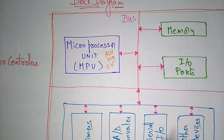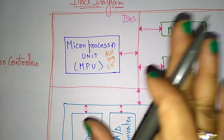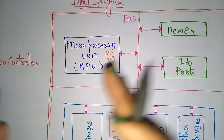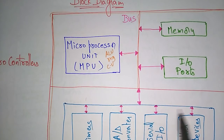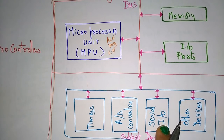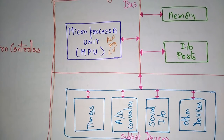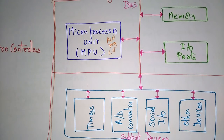The data bus carries what type of data is to be transferred from one component to another. The control bus controls the data transfer to a particular address. A system bus is divided into address bus, data bus, and control bus. All components are connected with the help of the bus, which is a communication line. Analog-to-digital converters, serial input/output, and other supporting devices are also connected in the microcontroller.